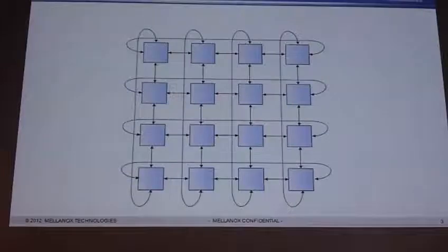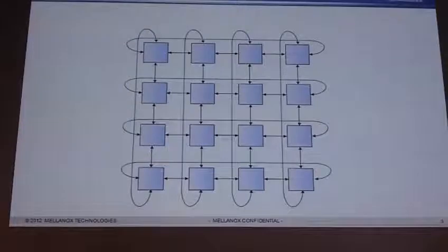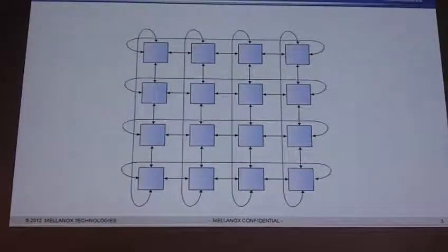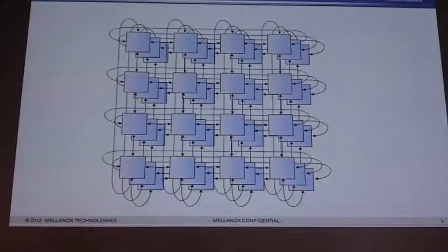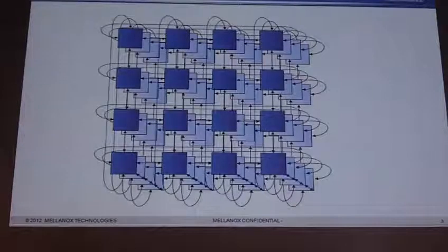So what is a 3D Taurus topology? I think it's easiest to look at it in two dimensions first. A 2D Taurus is basically two dimensions, X and Y, of a bunch of different nodes. The nodes talk to each other by communicating in the X direction and then up in the Y direction. They also have a unique feature where it wraps around — so you don't have to go all the way through; you can wrap around to the minimum hop. To make this 3D, I simply stack these up in the Z direction and connect them all together, giving me three dimensions — X, Y, and Z — to get to any switch node.